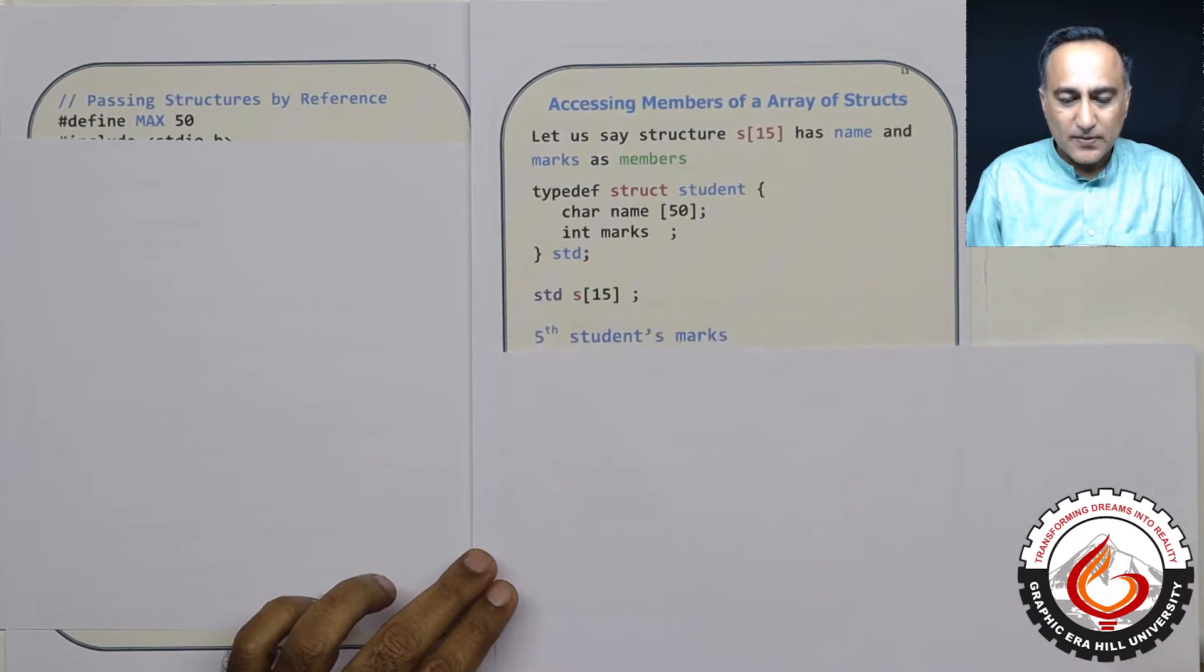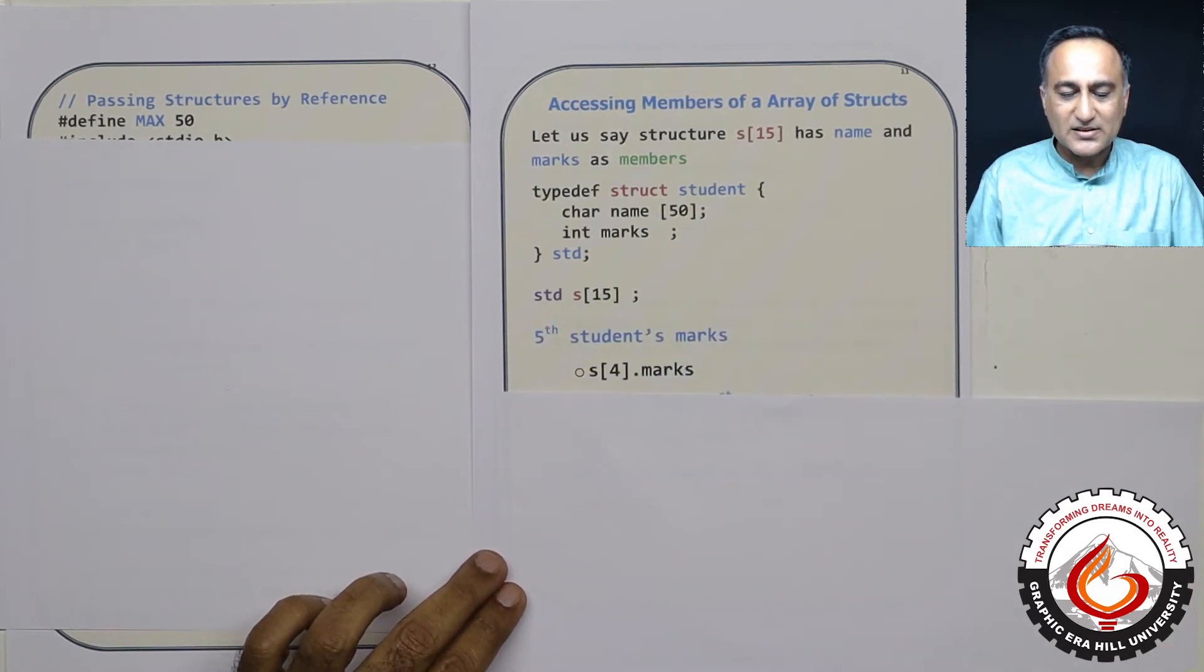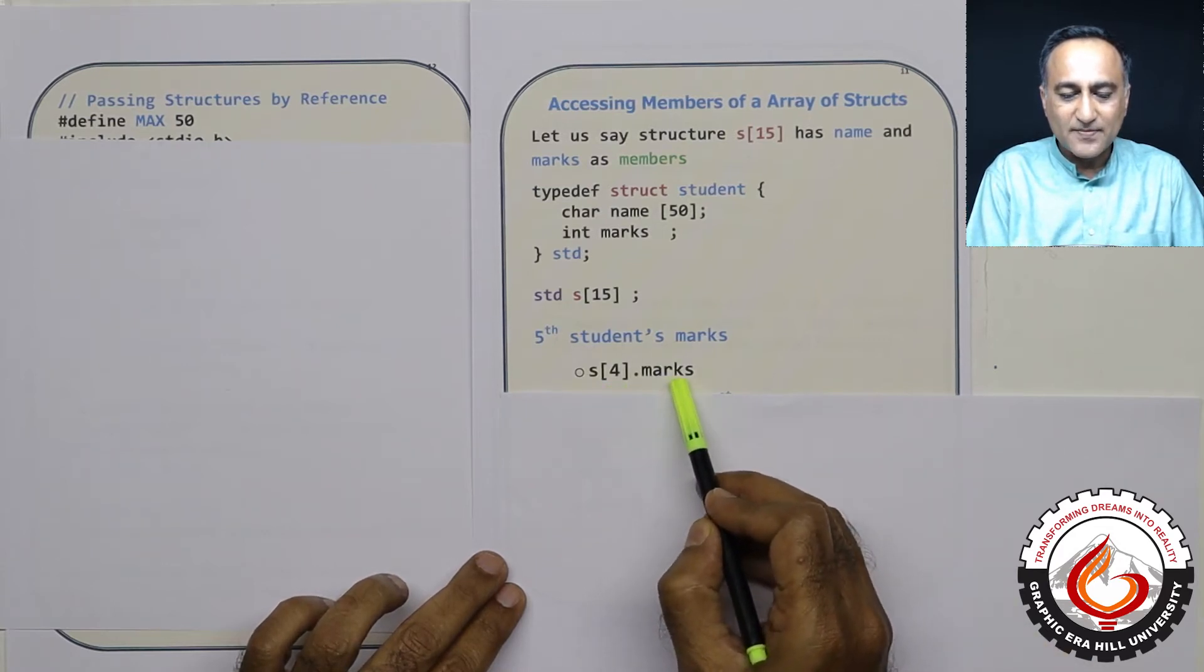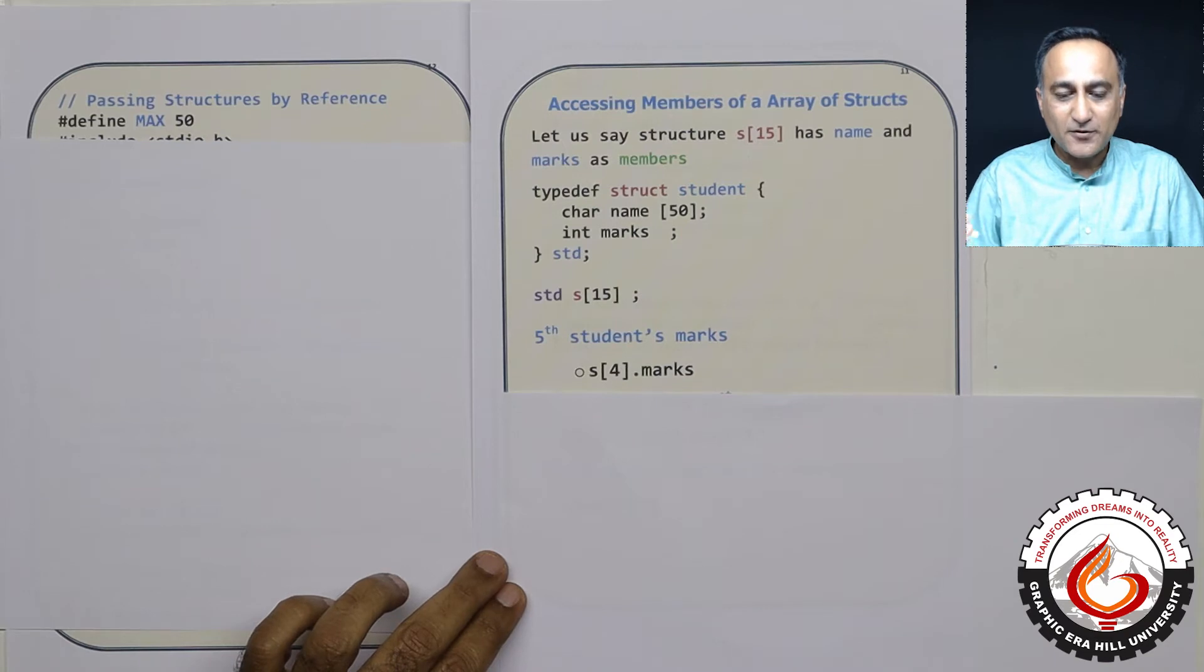Now suppose I want to look at the fifth student's marks. Since I'm starting from zero, s of four dot marks is going to give me the marks of the fifth student.